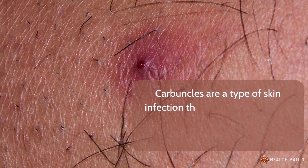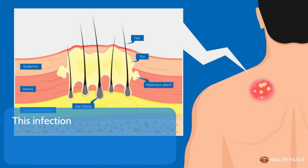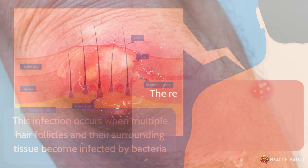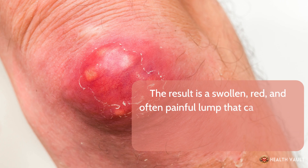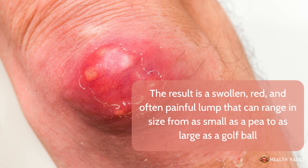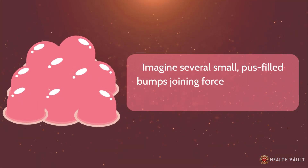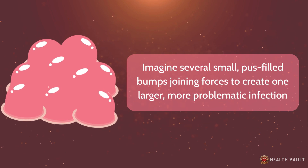Carbuncles are a type of skin infection that can be both painful and concerning for those who experience them. This infection occurs when multiple hair follicles and their surrounding tissue become infected by bacteria. The result is a swollen, red, and often painful lump that can range in size from as small as a pea to as large as a golf ball — imagine several small, pus-filled bumps joining forces to create one larger, more problematic infection.